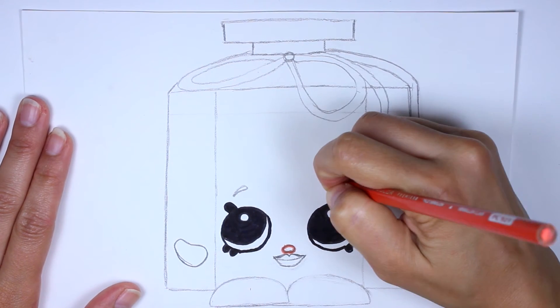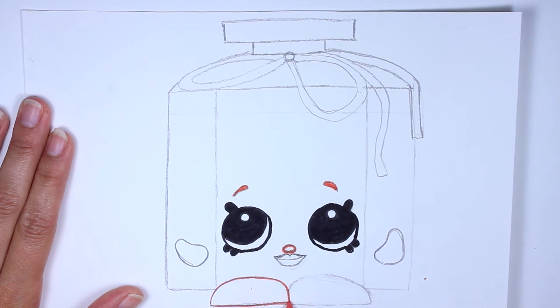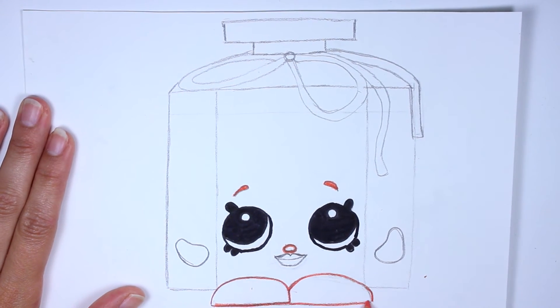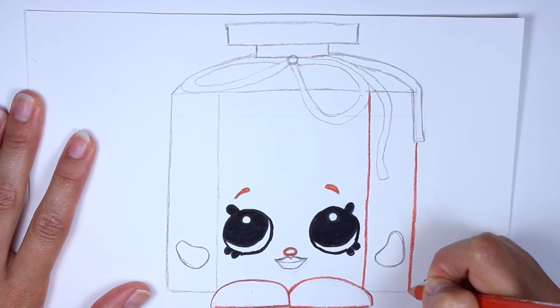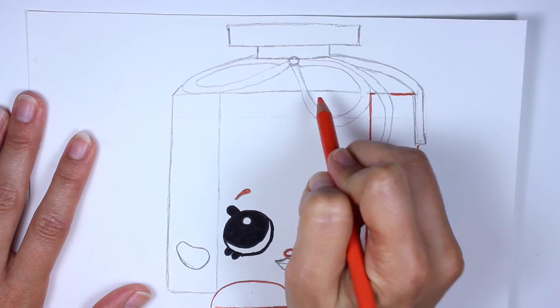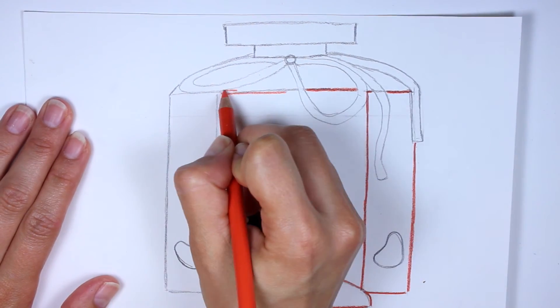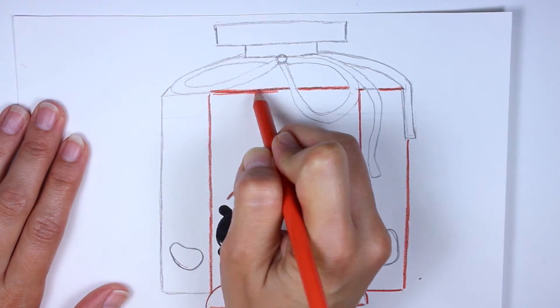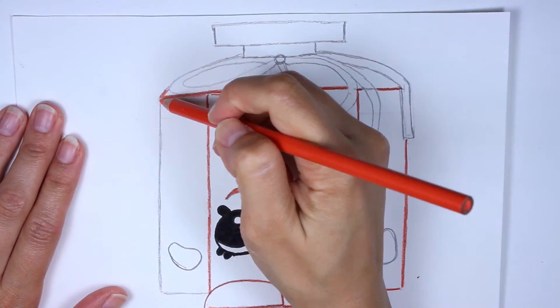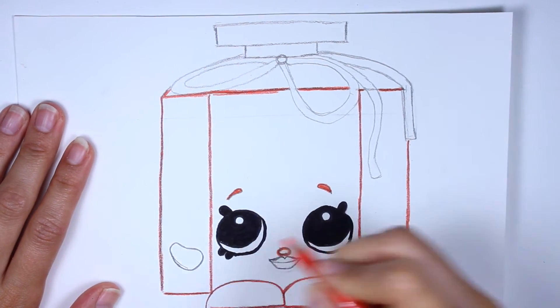There we go with the eyes. Next, we're taking the orange color and we are coloring in the eyebrows, tracing the nose, and we're going to trace her entire body. Be sure not to trace the ribbons or the lid because those are not supposed to be orange. So once again, color in the eyebrows, trace the nose, and then trace the rest of her body, the bottle and her hands.